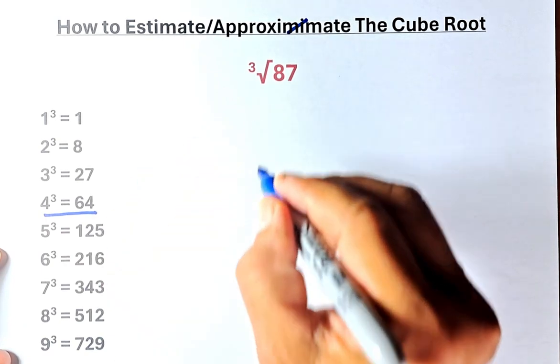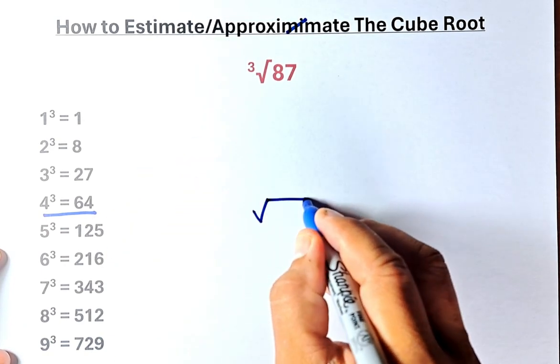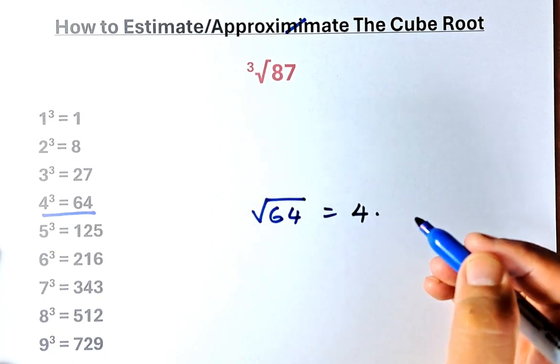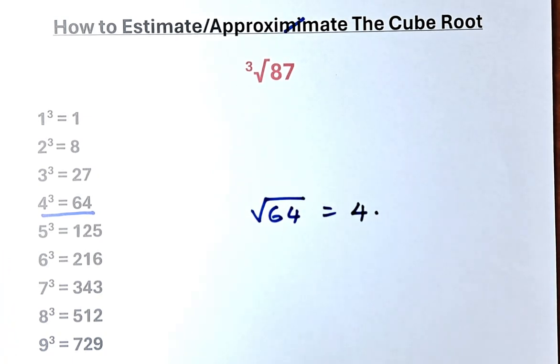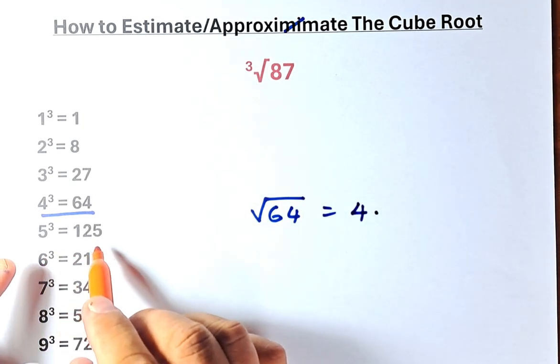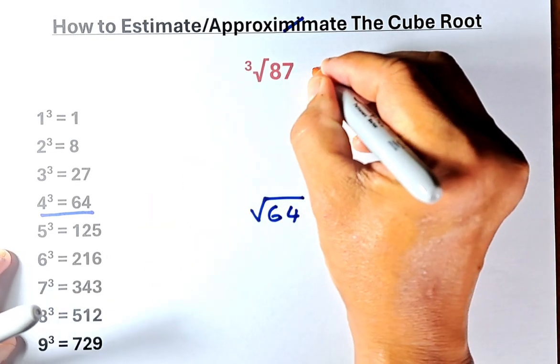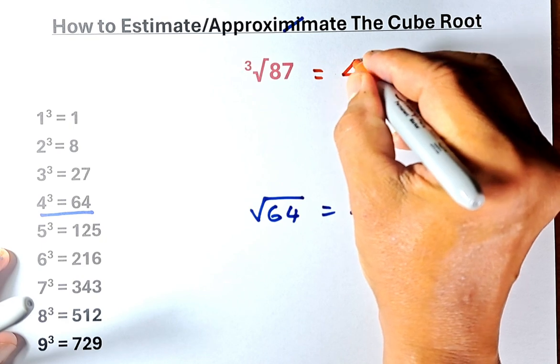So we are going to put cube root of 64 over here. Cube root of 64 equals to 4. So now the cube root of 87 cannot be more than 4 because if it's 5, that's 125. So the first whole number is going to be 4.